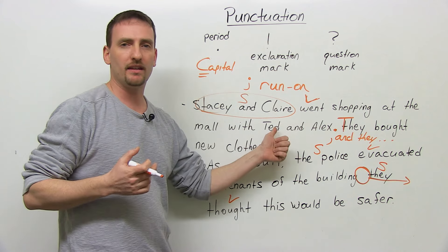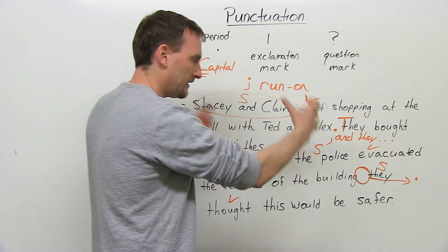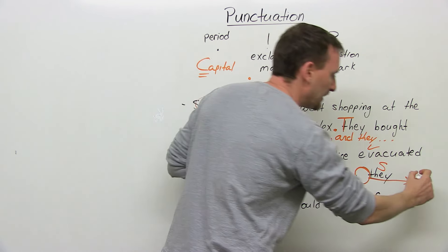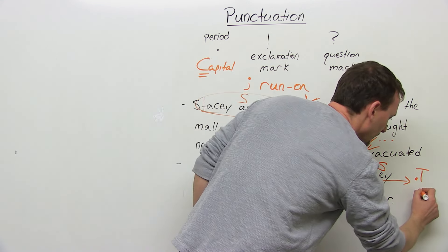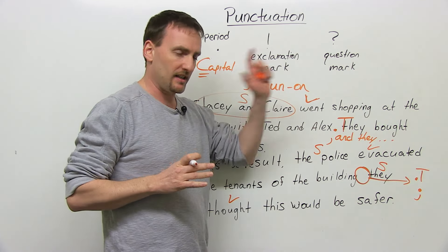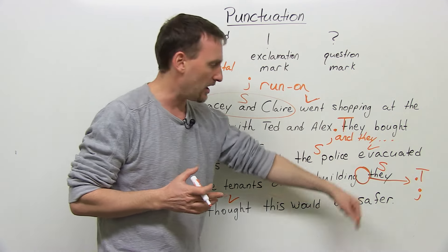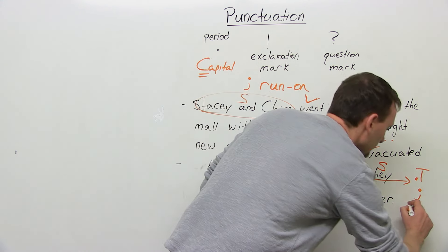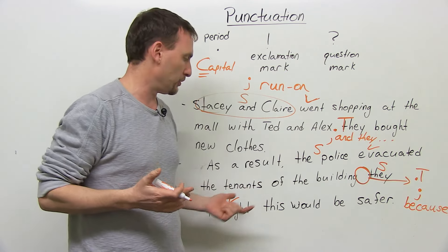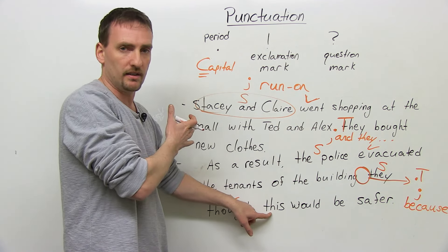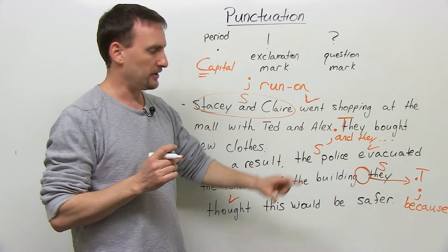This sentence explains why they did the action in the first sentence. How can I fix it? One way: put a period. The idea ends, it's complete, and I go to the next idea beginning with a capital T for "they." Another way is to put a semicolon. Another way is to put "because" — "because they thought this would be safer" — making a subordinate clause. There are three ways you can fix this so you don't have a run-on sentence.